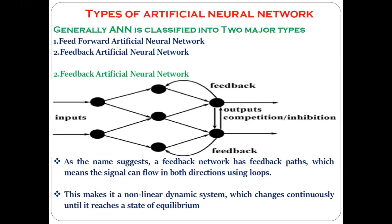The feed-forward ANN is divided into two types: single-layer feed-forward ANN and multi-layer feed-forward ANN. We completed both last time. Based on how the processing units or artificial neurons are connected together — called network topology — this type of ANN is classified. Can anyone tell me the difference between the single-layer and the multi-layer ANN?